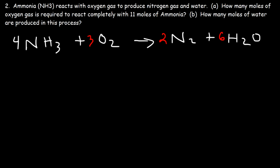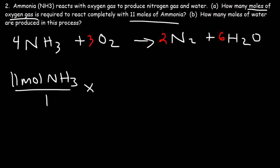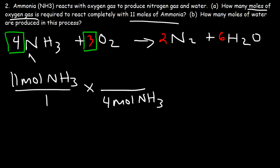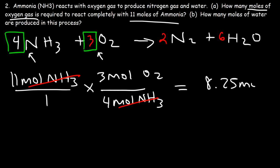For part A, we have 11 moles of NH₃ and need to convert to moles of O₂. The molar ratio between NH₃ and O₂ is 4 to 3, so for every 4 moles of ammonia that reacts, 3 moles of oxygen reacts with it. We put 4 moles of NH₃ on the bottom and 3 moles of O₂ on top, so the units of NH₃ cancel. The calculation is 11 times 3, which is 33, divided by 4, giving 8.25 moles of O₂.